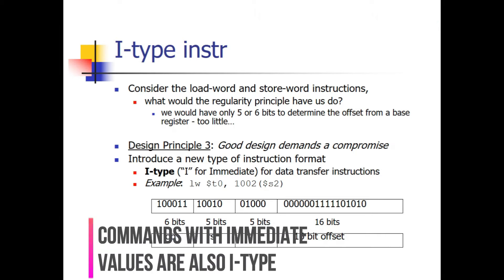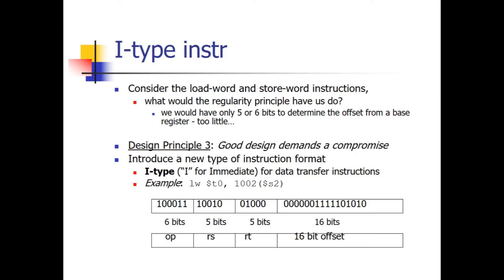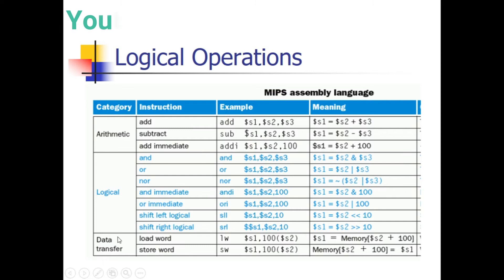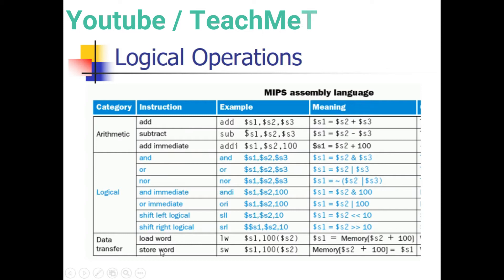There are two commands that implement I-type instructions: number one is Load Word, and number two is Store Word. Whenever we need to store a value in memory we use Store Word, and whenever we want a value from memory into a register we use Load Word. Both Load Word and Store Word fall under I-type instructions and are used for data transfer.